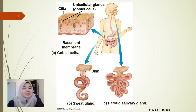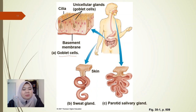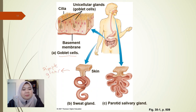Here are some examples of specialized epithelial tissues. Goblet cells are located in between the pseudo-stratified columnar epithelial cells, secreting mucus. Then we have two types of exocrine glands. The first is a simple gland, which has a single coiled duct or coiled tube — an example is the sweat gland.